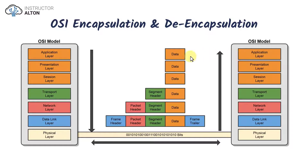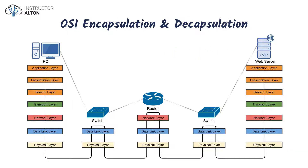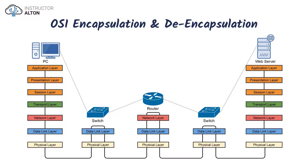Now let's take a look at a more detailed view where we're traversing one network to another network through switches and routers. In this diagram, we have a PC on one network that wants to request a web page from a web server on a different network. They're connected via a router, and both sides have a switch. We'll discuss at a high level how data encapsulation and decapsulation occurs, and what devices look at which layers of the OSI model.